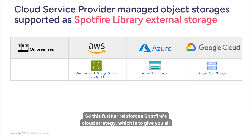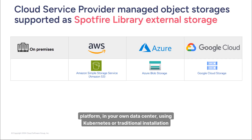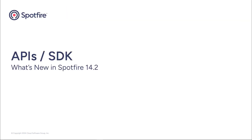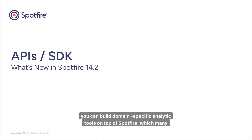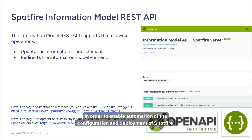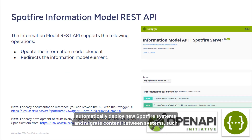This further reinforces Spotfire's cloud strategy, which is to give you all the flexibility you need to install Spotfire as you wish — in any cloud platform, in your own data center, using Kubernetes or traditional installation using virtual machines. For admins and developers, we have added REST APIs to replace some older APIs. Spotfire is a very extensible and customizable platform — you can build domain-specific analytic tools on top of Spotfire, or automate deployment and configuration of the Spotfire system itself, including migrating content between systems during updates or in a development-test-production scenario.